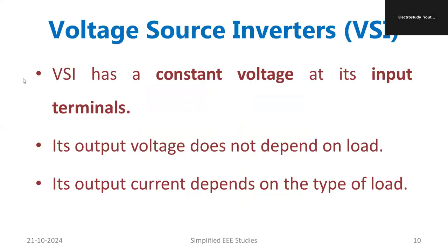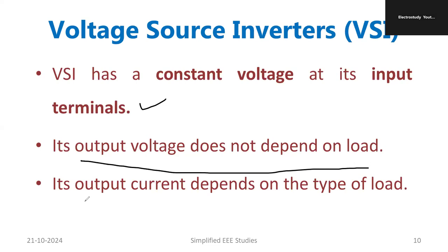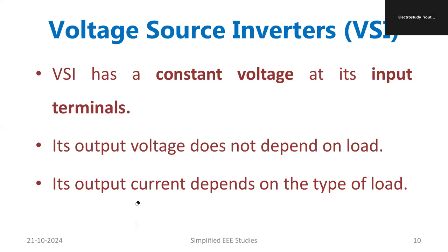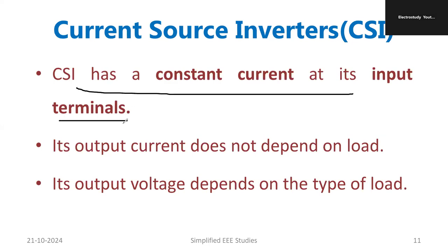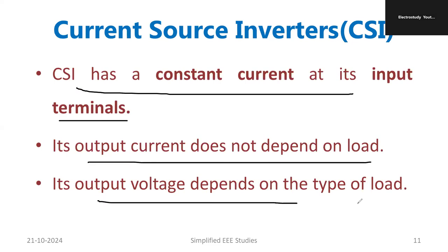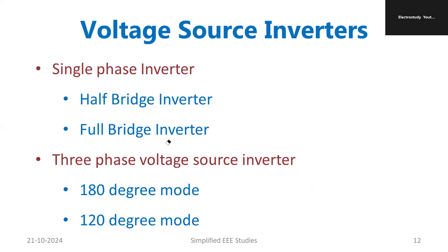To summarize: the VSI has a constant voltage at its input terminal and the output voltage does not depend on the load, while output current depends on the type of load. That is a major characteristic of VSI. Regarding CSI, it is just the opposite — CSI has a constant current at its input terminal, the output current does not depend on the load, and the output voltage depends on the load. These are the key peculiarities of the CSI.